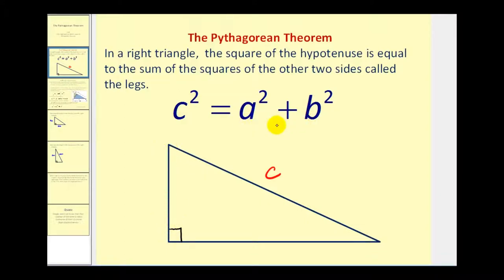It doesn't matter which leg is a and which leg is b, because notice they're on the same side of the equal sign. So let's go ahead and call this side a and this side b. The length of this side squared must equal the length of this side squared plus the length of this side squared.